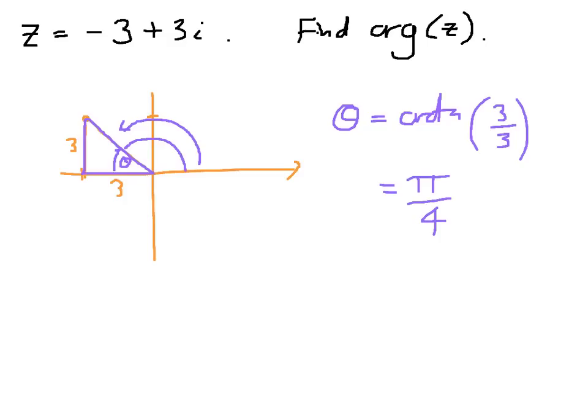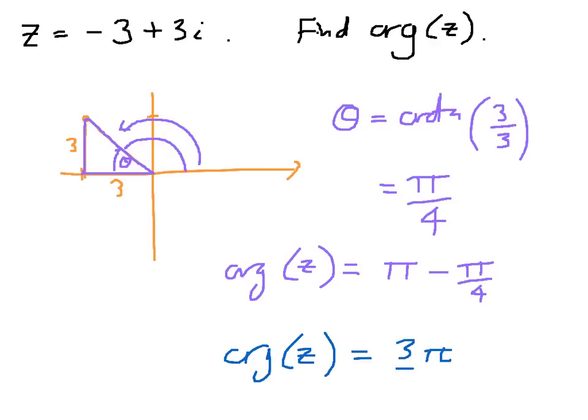But you can clearly see that the argument of z that I want is going to equal, well, 180 degrees, which is pi, take away a quarter of pi. And so my final answer that I'm going to give, the argument of z that I have been asked to find, equals 3 quarters of pi, or 3 pi upon 4.